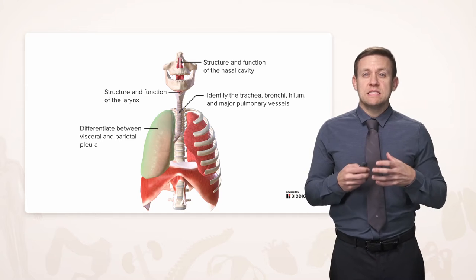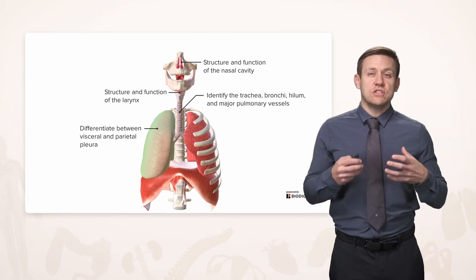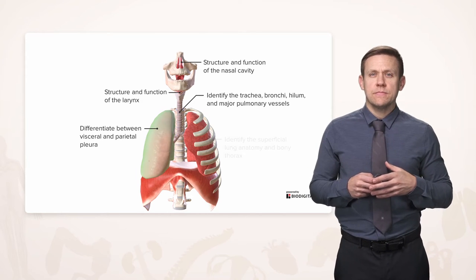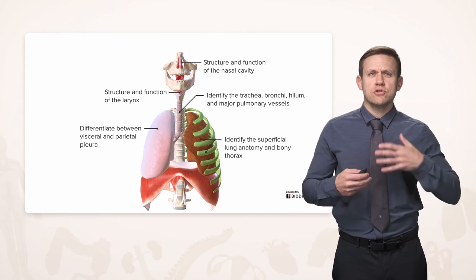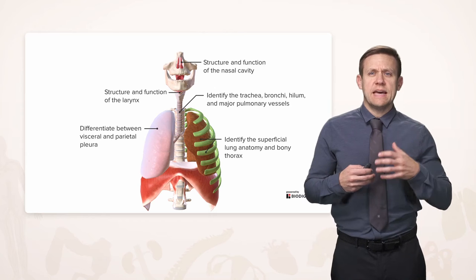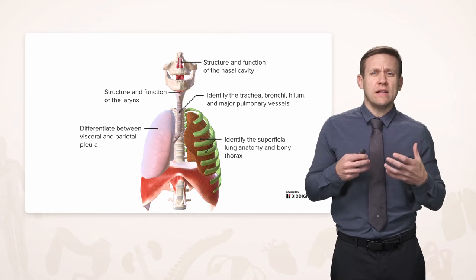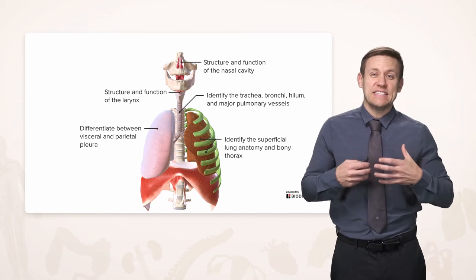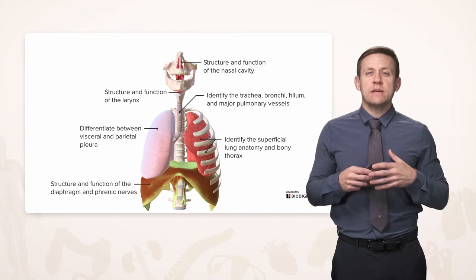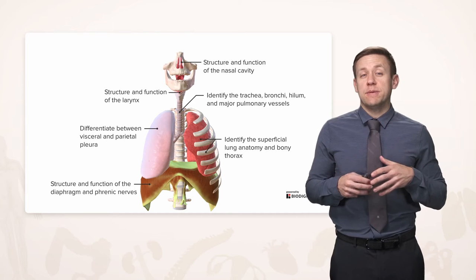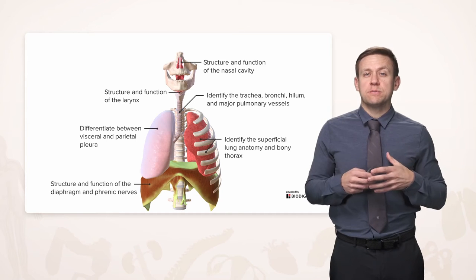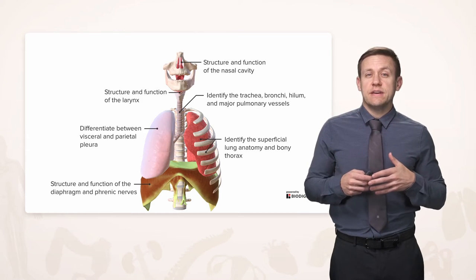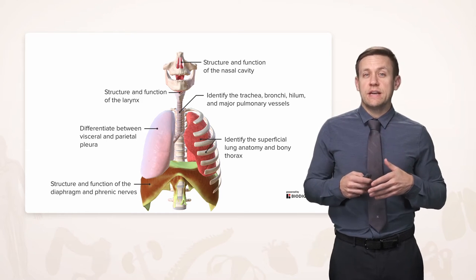We're going to talk about the wrappings of the lung and the chest cavity called the pleura. We're going to talk about superficial anatomy of the lungs as well as the bony thorax that encases the lungs. And then finally we're going to talk about the major muscle of respiration, which is the diaphragm, and the nerve that innervates it, which is the phrenic nerve.